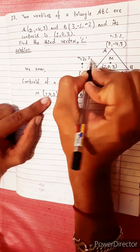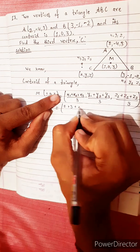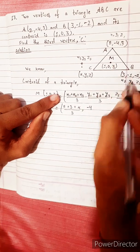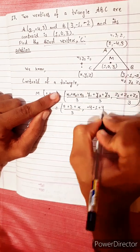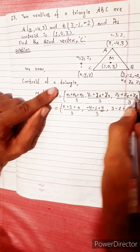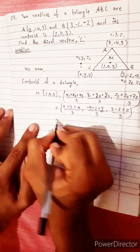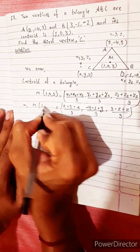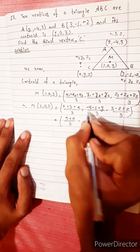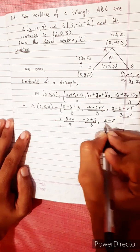Substituting values: (2 plus 3 plus x) divided by 3, (-4 plus -1 plus y) divided by 3, (3 plus -2 plus z) divided by 3 equals M(1, 0, 3). This becomes (5 plus x) by 3, (-5 plus y) by 3, (1 plus z) by 3.